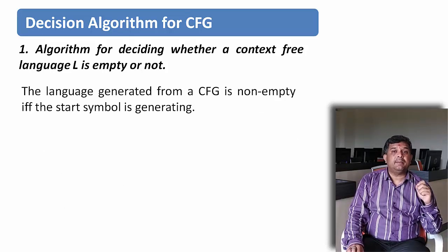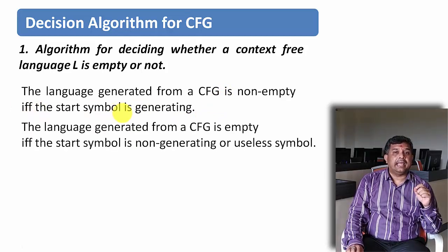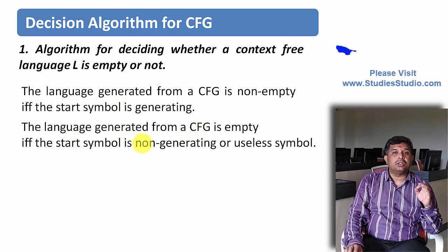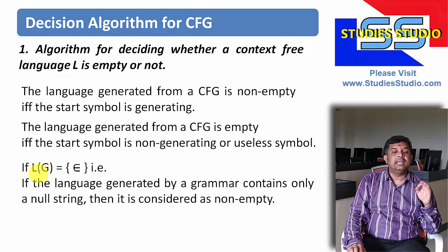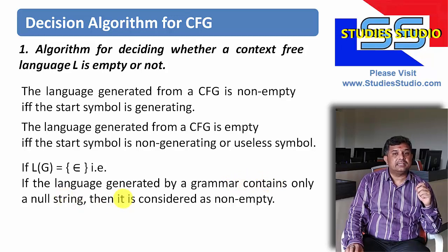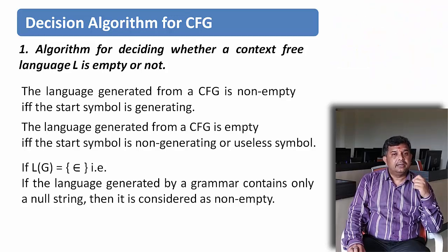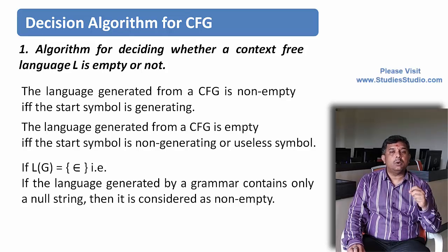The language generated by a context-free grammar is non-empty if and only if the starting symbol is non-generating or a useless symbol. If the language generated by a grammar contains only the null string, then it is still considered non-empty. So we can use this algorithm to say whether a particular context-free grammar is empty or not.